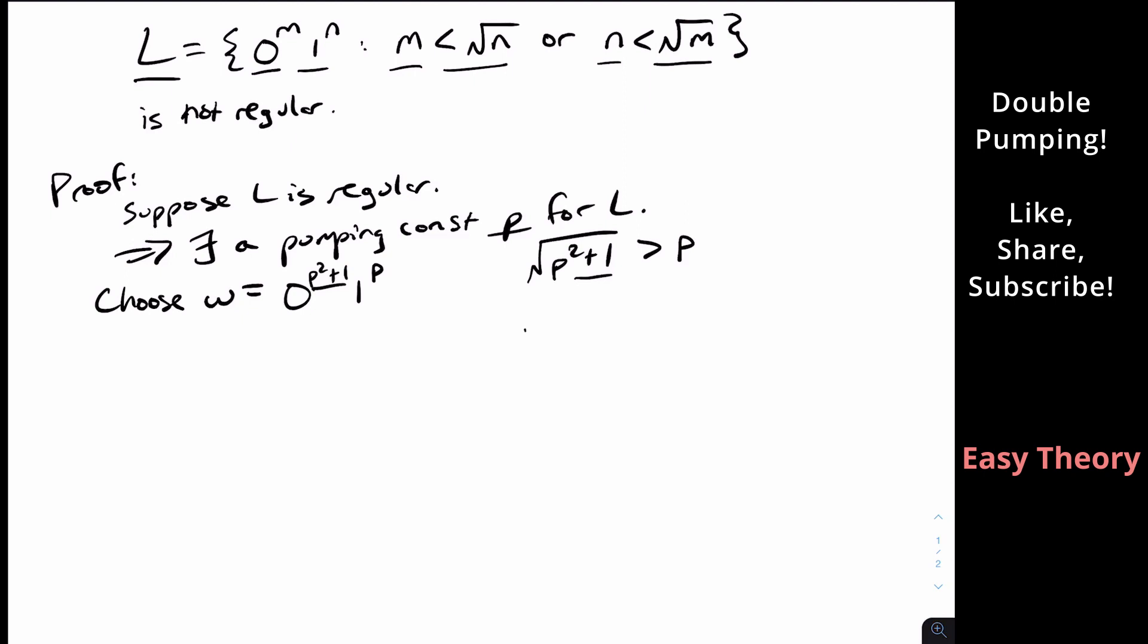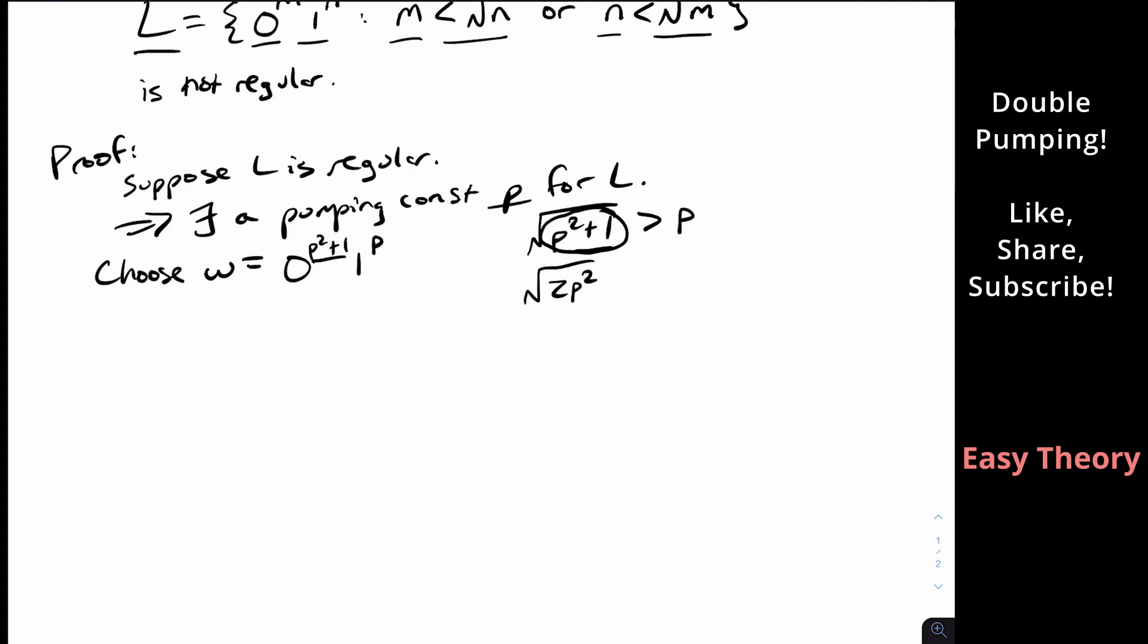So then you may be thinking, okay, why didn't you just pick like two P squared or something, instead of P squared plus one? Well, the common trick with doing these is we always want to pick a length that is right on the boundary of being out of the language. So if I had this be one less, then it's not in the language anymore. So that's actually the key in trying to show that this is not regular.